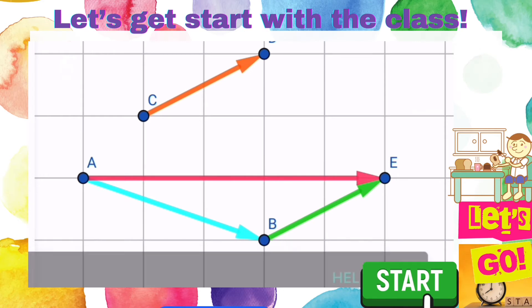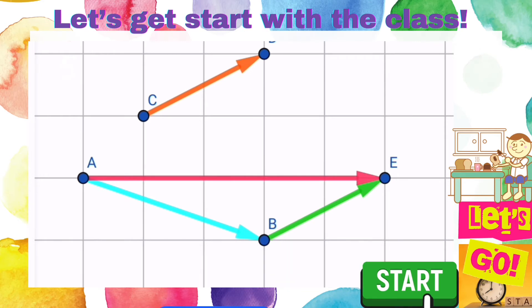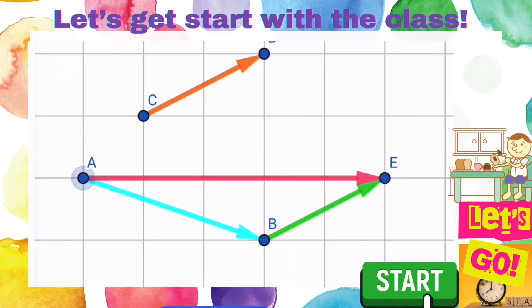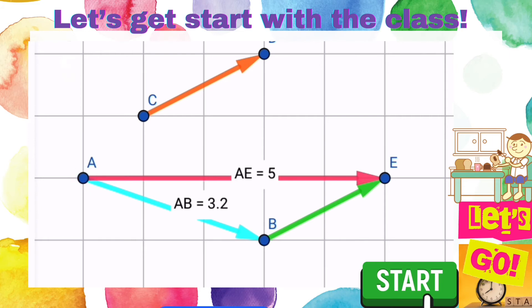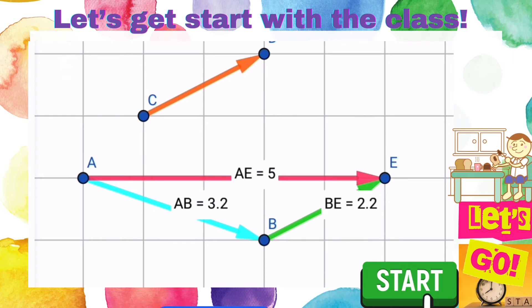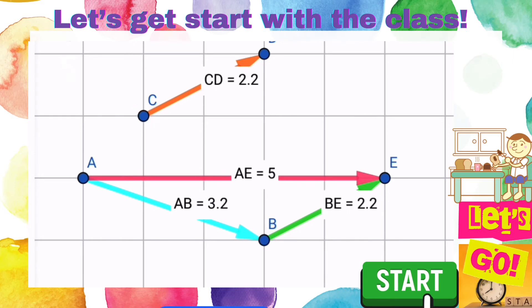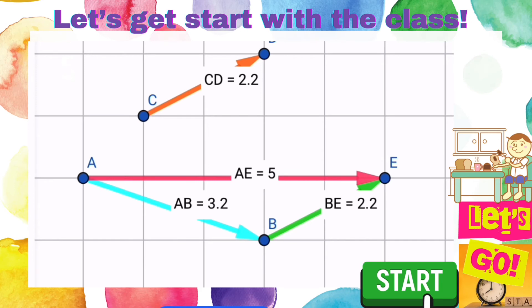In conclusion, the magnitude of line AE is 5 units, the magnitude of line AB is 3.2 units, and the magnitude of line BE is 2.2 units.